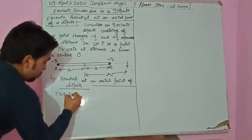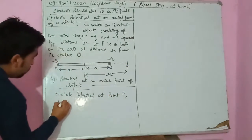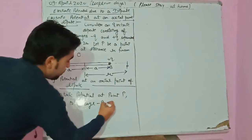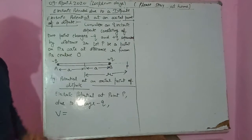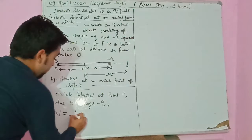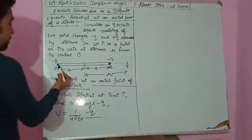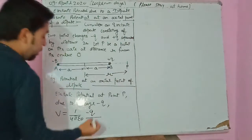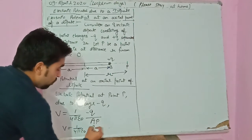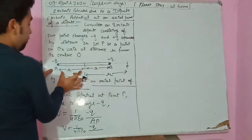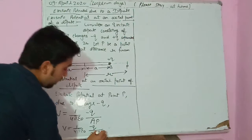Let us calculate the electric potential at point P due to charge minus Q. We use the point charge formula: V = (1/4πε₀)(Q/r). So V due to minus Q equals (1/4πε₀)(−Q/AP). The distance AP is R plus A, since we add the distance from the center to minus Q and from center to P. So this gives us (1/4πε₀)(−Q/(R+A)).